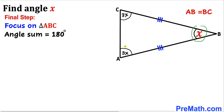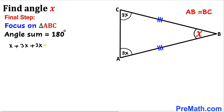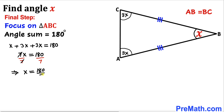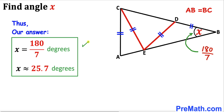In triangle ABC, the sum of all three angles must equal 180 degrees. So X plus 3X plus 3X equals 180 degrees. Adding the left-hand side gives us 7X equals 180 degrees. Dividing both sides by 7, angle X is equal to 180 divided by 7 degrees, which is approximately 25.7 degrees.